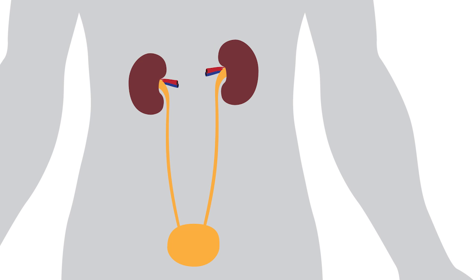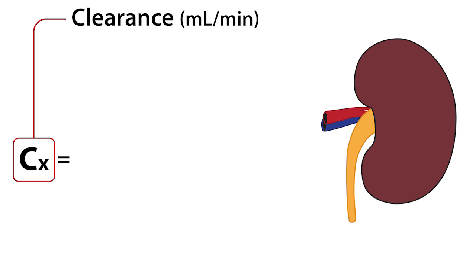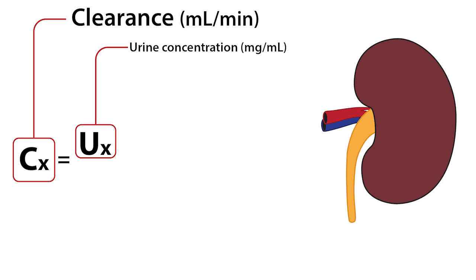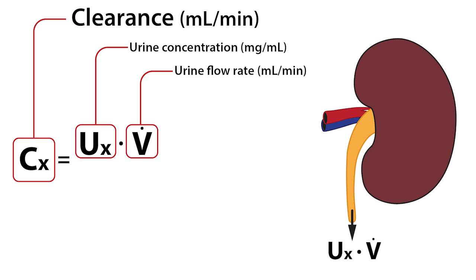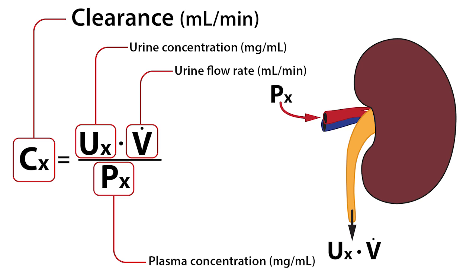The following equation is routinely used to calculate the clearance rate of a substance, where Cx, or clearance rate expressed in milliliters per minute, equals the urine concentration of substance X expressed in milligrams per milliliter times the urine flow rate expressed in milliliters per minute, divided by the plasma concentration of substance X expressed in milligrams per milliliter.